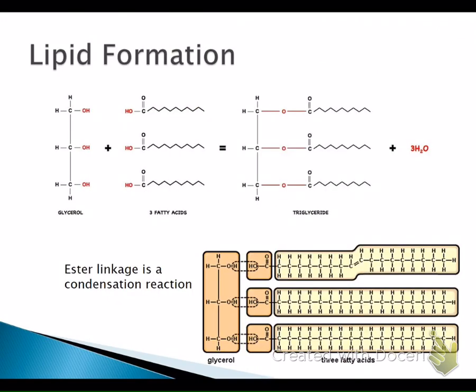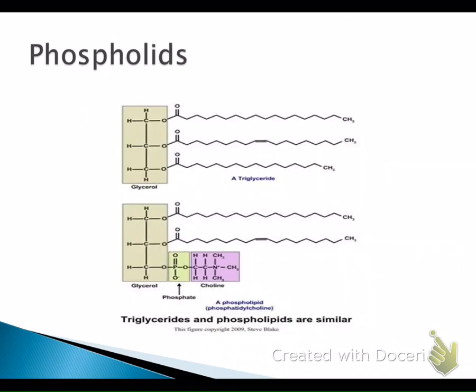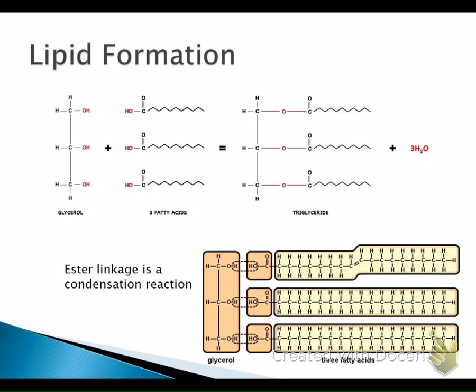This is the same reaction shown with a slightly better diagram. The glycerol's OH groups are highlighted in red, and we react them with a fatty acid chain — its OH also highlighted in red. They come together and kick out a water, forming the ester linkage. This happens three times to form a triglyceride. Feel free to pause and take a look at that reaction so you're comfortable with how it forms.